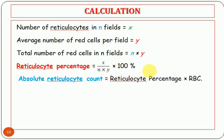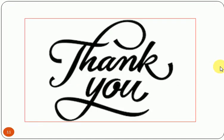To calculate the absolute reticulocyte count, multiply the reticulocyte percentage by the RBC count from the same blood sample. Thank you for watching, and see you in another video.